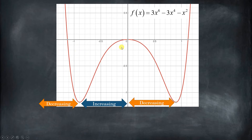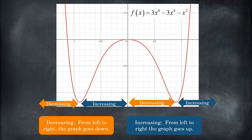It starts decreasing again from 0 to 0.9, and increasing again from maybe 0.9 to positive infinity. So from left to right, if it's going down, it's decreasing; if it's going up, it's increasing. That's a visual way to analyze if a function is increasing or decreasing over a given interval.